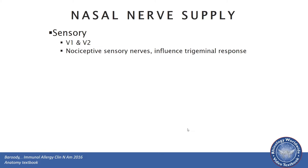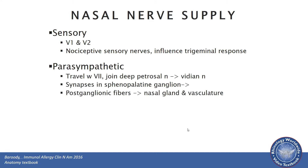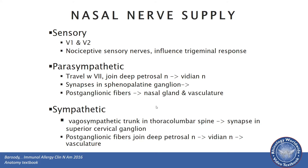The nasomucosal nerve supply is rather vast, and we can break it down into these parts. There is sensory input with contributions from V1 and V2, and nociceptive sensory nerves which influence the trigeminal response as mentioned. The parasympathetic nerve supply travels with cranial nerve 7 to join the deep petrosal nerve in the vidian nerve, to synapse in the sphenopalatine ganglion. There are also sympathetic fibers which synapse in the superior cervical ganglion, whose post-ganglionic fibers also join the deep petrosal nerve to form part of the vidian nerve and affect the vasculature.